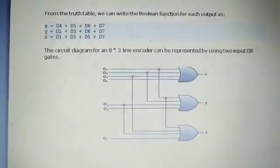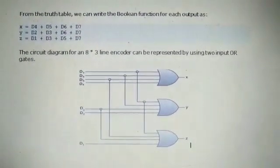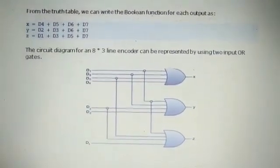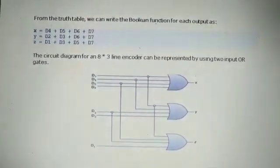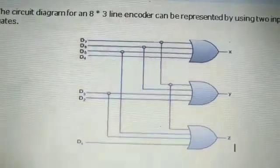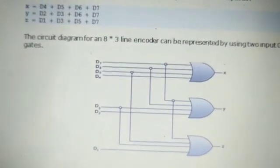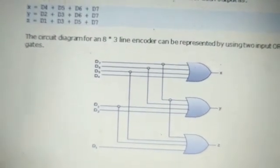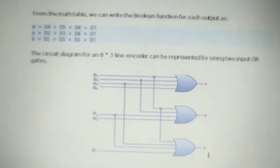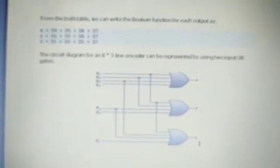To implement this circuit, we require only OR gates because the plus operation is there. There are 3 output lines, so we require only 3 OR gates. For x, we combine d4, d5, d6, and d7. For y, we take d2, d3, d6, and d7. For z, we take d1, d3, d5, and d7. In this way, we can generate our logical circuit. Thank you student.